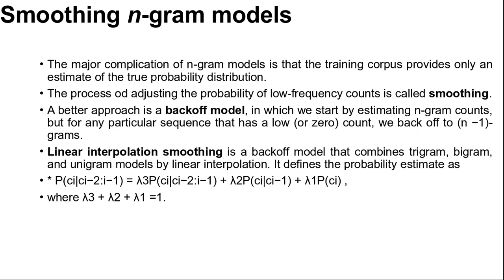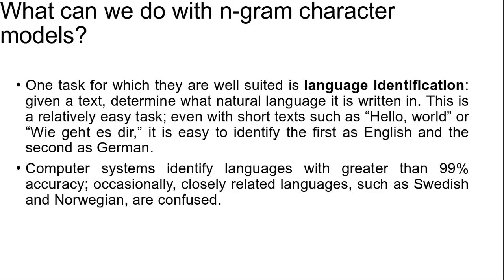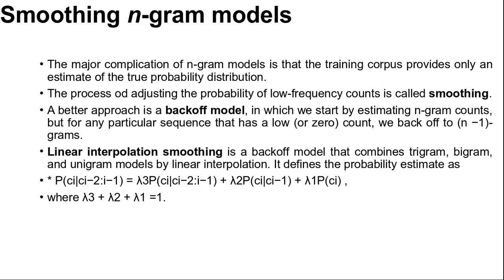Next is smoothing n-gram models. The major complication of n-gram models is that the training corpus provides only estimates of the true probability distribution. For common character sequences such as space-th, any English corpus will give a good estimate of about 1.5% of all trigrams. On the other hand, space-ht is very uncommon — no dictionary words start with ht — and it is likely that the sequence would have a count of zero in a training corpus of standard English.